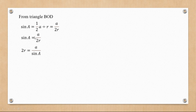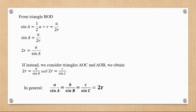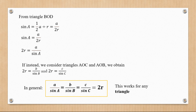We can also see that 2R is equal to a/sin A. We do that by cross-multiplying and making 2R the subject. If instead we consider triangles AOC and AOB, we can also see that 2R equals b/sin B and 2R equals c/sin C. So therefore, in general, a/sin A = b/sin B = c/sin C, all equal to 2R. That is what we call the sine rule.